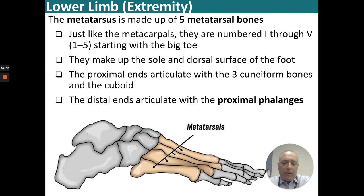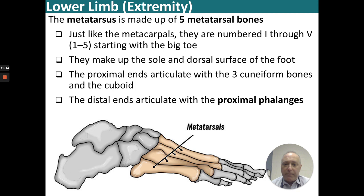Moving distally, we have the metatarsus, made up of five metatarsal bones — just like the metacarpals, numbered one through five — making up the sole and dorsal surface of the foot. The proximal ends of the metatarsals articulate with the cuneiform bones and the cuboid, and the distal ends articulate with the proximal phalanges.